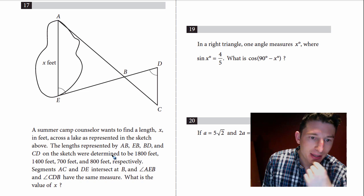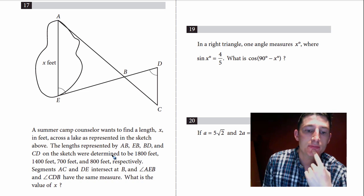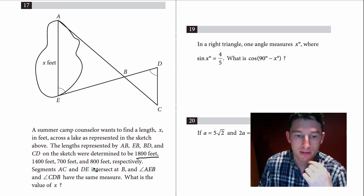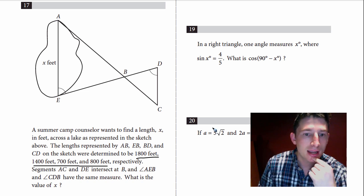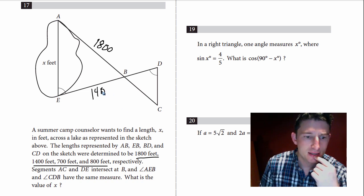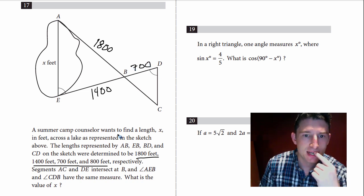Finally, number 17 — the one I avoided. A summer camp counselor wants to find length x in feet across a lake. The given lengths are: AB = 1,800 feet, EB = 1,400 feet, BD = 700 feet, and CD = 800 feet. Segments AC and DE intersect at B, and angle AEB equals angle CDB. So we label what we know: those angles are equal, and vertical angles at B are also equal. With two pairs of equal angles, we have similar triangles.